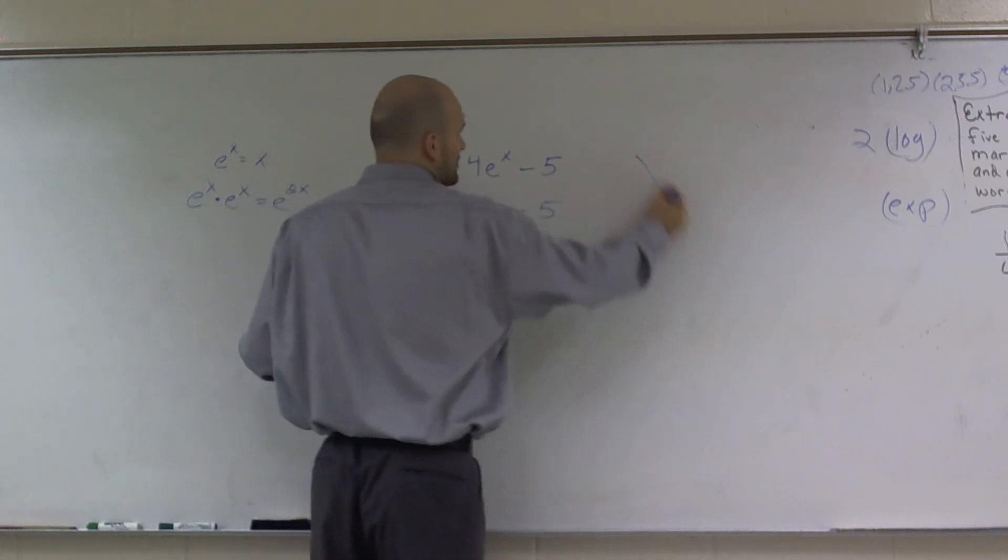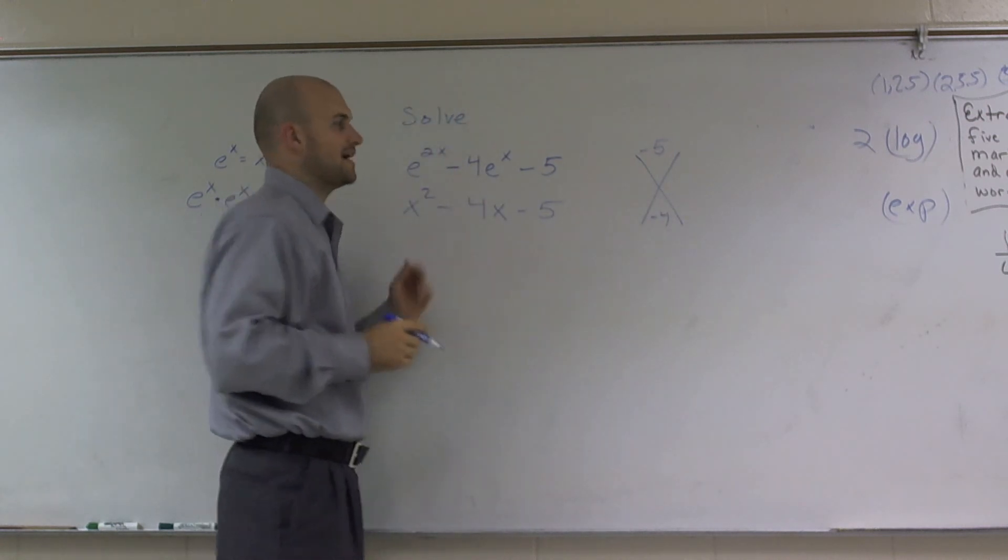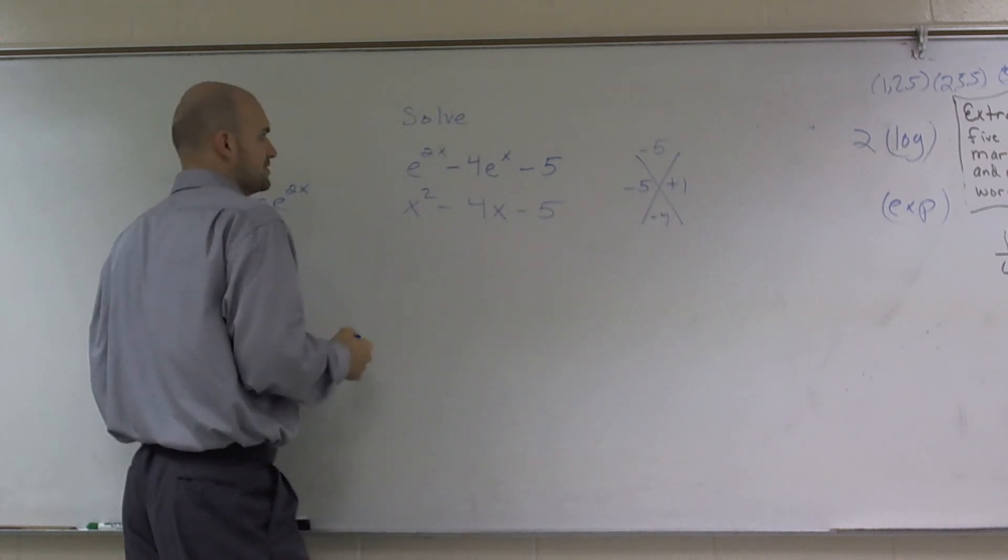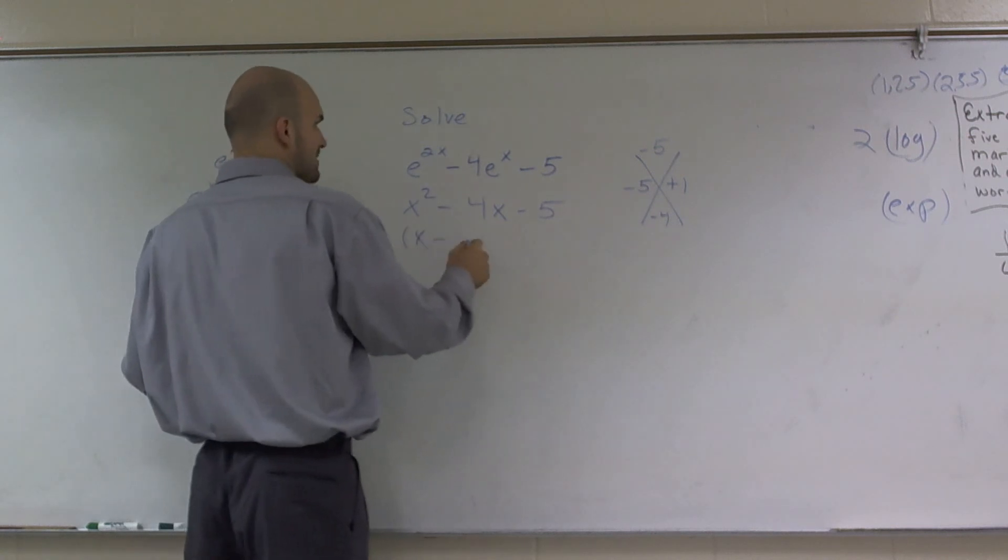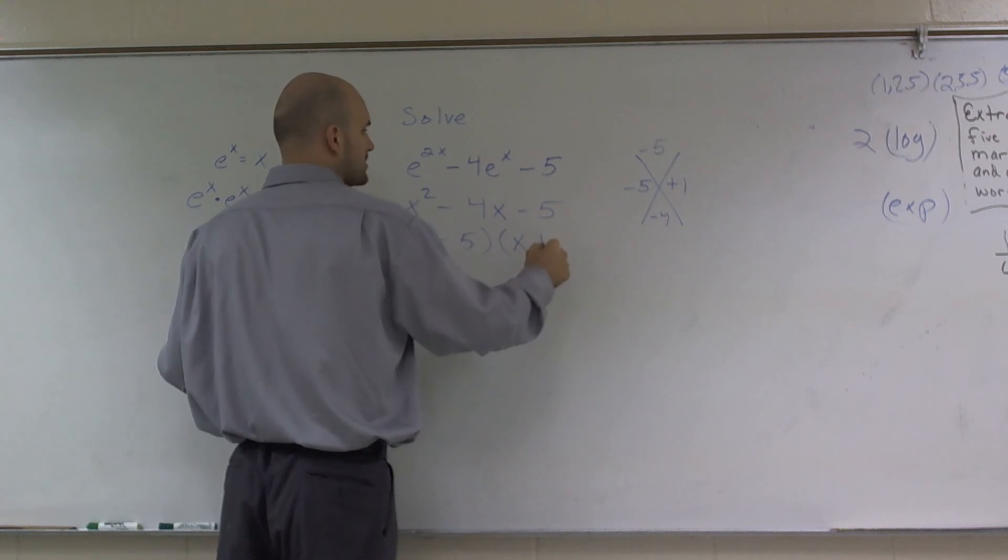So then to factor this problem, we'll have negative 5 and negative 4. What two numbers multiply to give you negative 5 but add to give you negative 4? And that's going to be a negative 5 and a positive 1. So what I can do is I can factor this as x minus 5 times x plus 1.